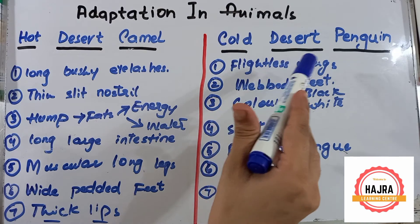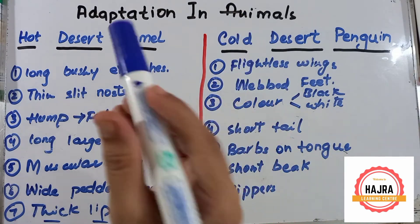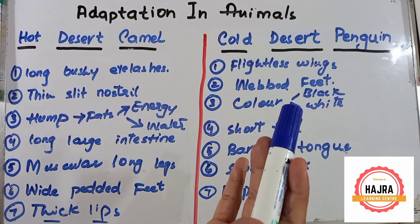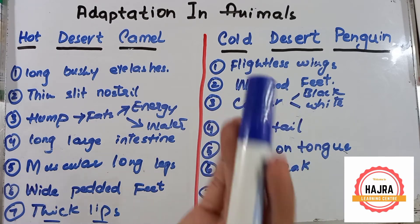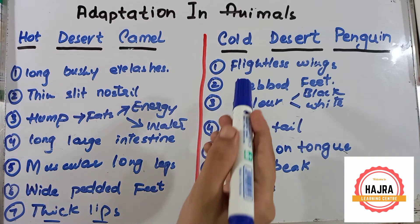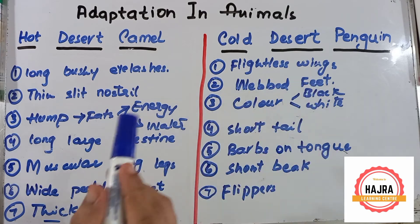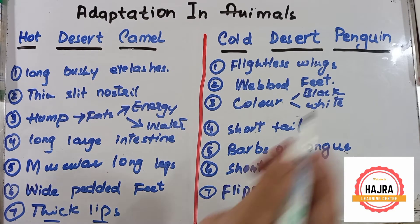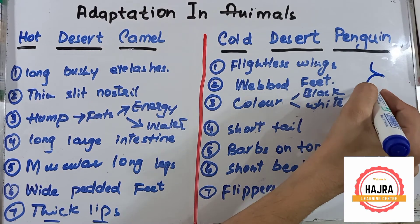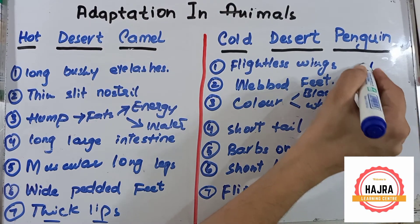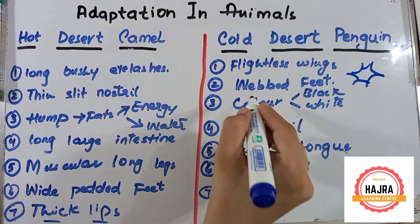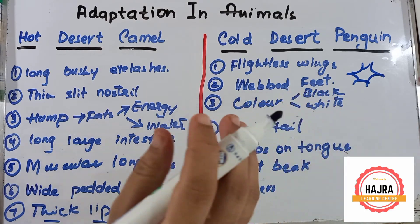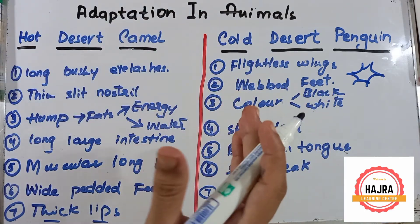Number one point: penguins have flightless wings that act as flippers in the water. Because of their wings, they can swim easily inside the water. Number two point: they have webbed feet. The function of webbed feet is to help them swim easily inside the water.